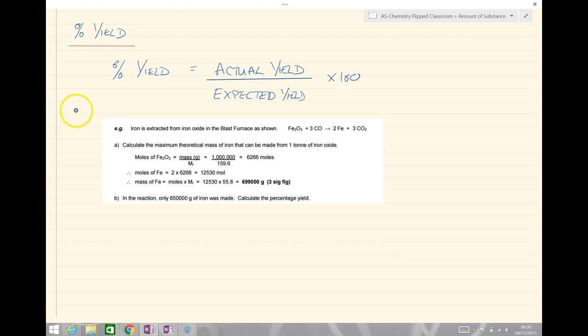And we can see this in our first example here, where we're going to measure our example. Our example is iron is extracted from iron oxide in the blast furnace as shown. Fe2O3 plus 3CO goes to make 2Fe plus 3CO2.